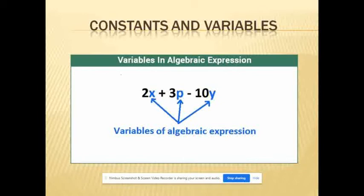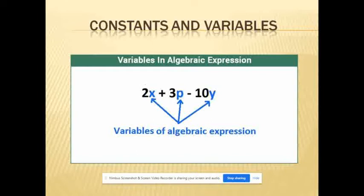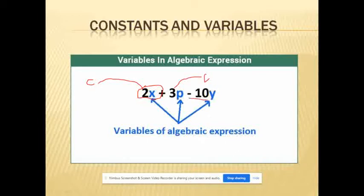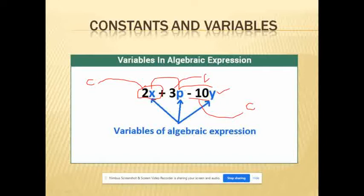Look at this picture. From the expression 2x, 3p, minus 10y: the value 2 is a numerical value — it comes under constant. 3 is also a numerical value, so it comes under constant. Minus 10 is also a numerical value, so it comes under constant. Then x, p, and y are alphabets, so these three are variables.